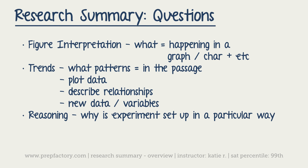For reasoning questions, they'll ask things like why did the researchers set it up this way, or why did they do this particular thing? They'll never ask 'what was the control' directly, but they'll say things like: why did the researchers raise the temperature 10 degrees and then wait 20 minutes to take a reading? The reason is that if you're testing for temperature reactions and raise it too quickly, you won't get an accurate reading because whatever you're testing for hasn't had enough time to react. So you're trying to make a controlled experiment with adequate time for variables to change — that's basically what you'd answer about why it's set up a certain way.